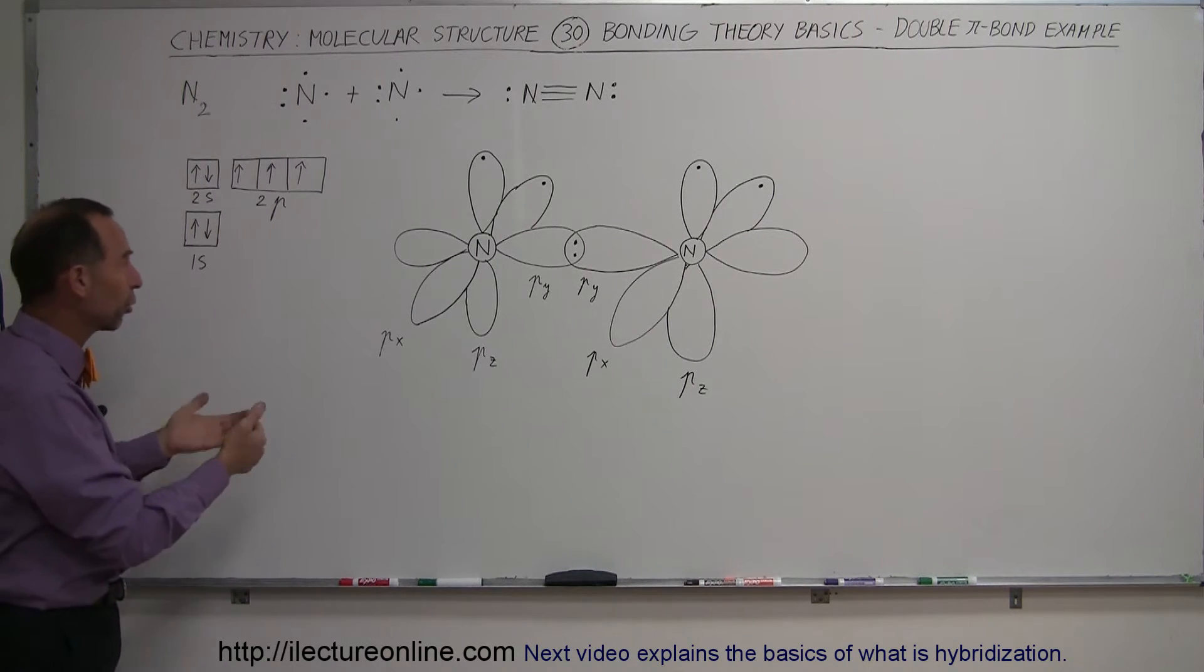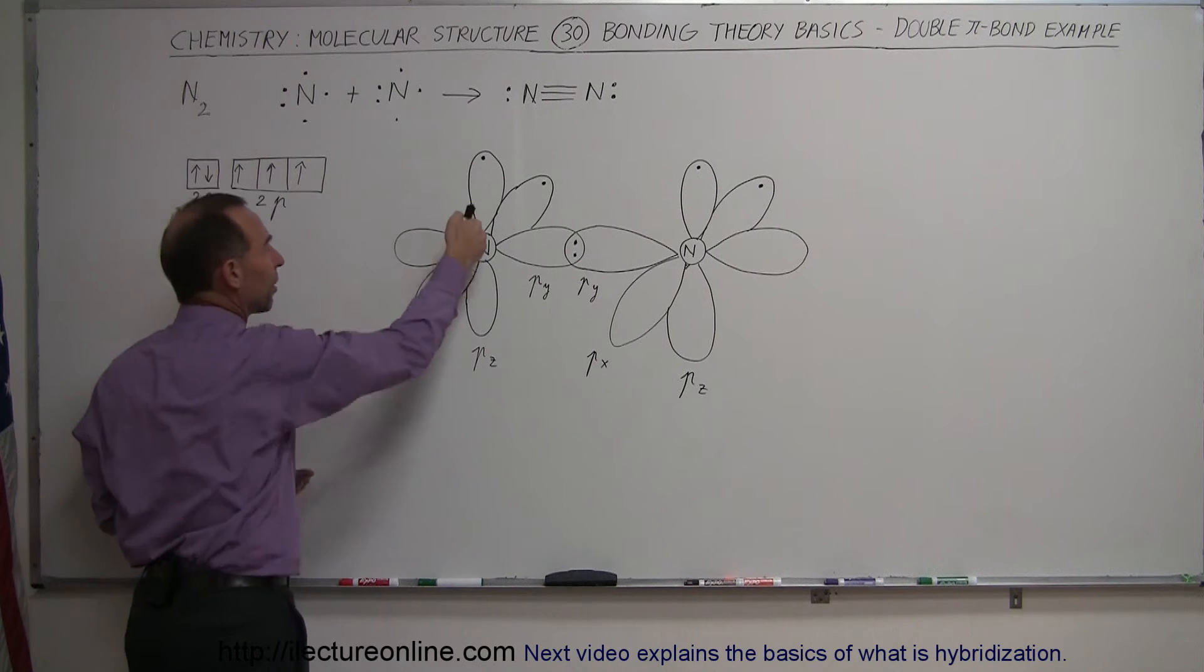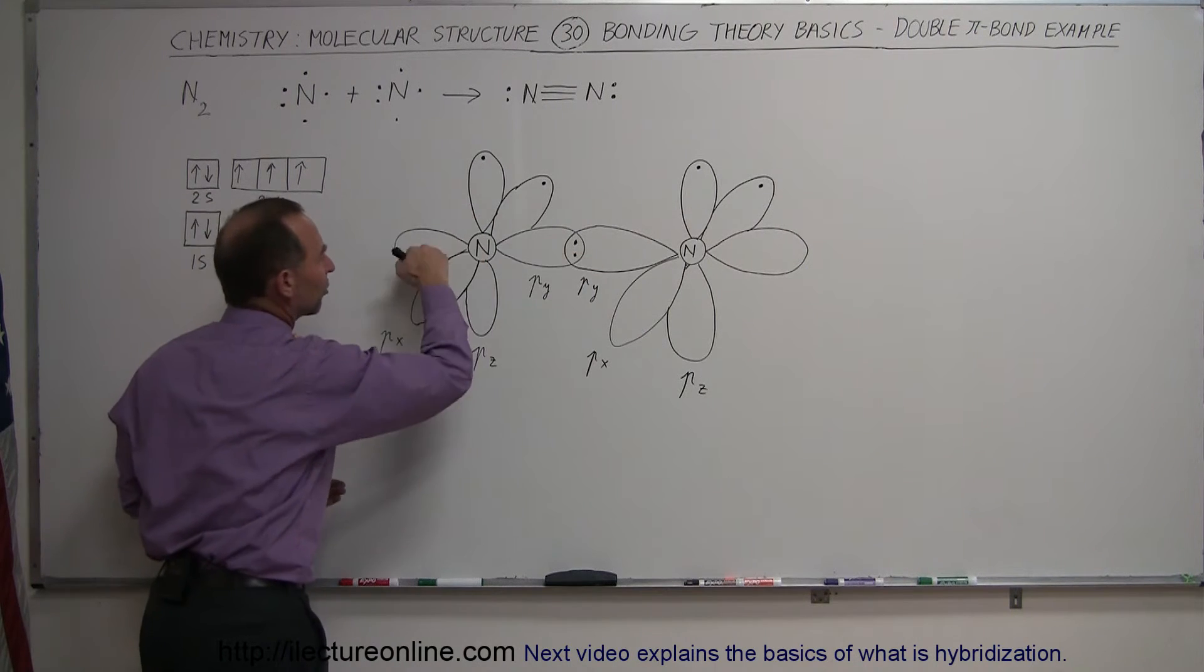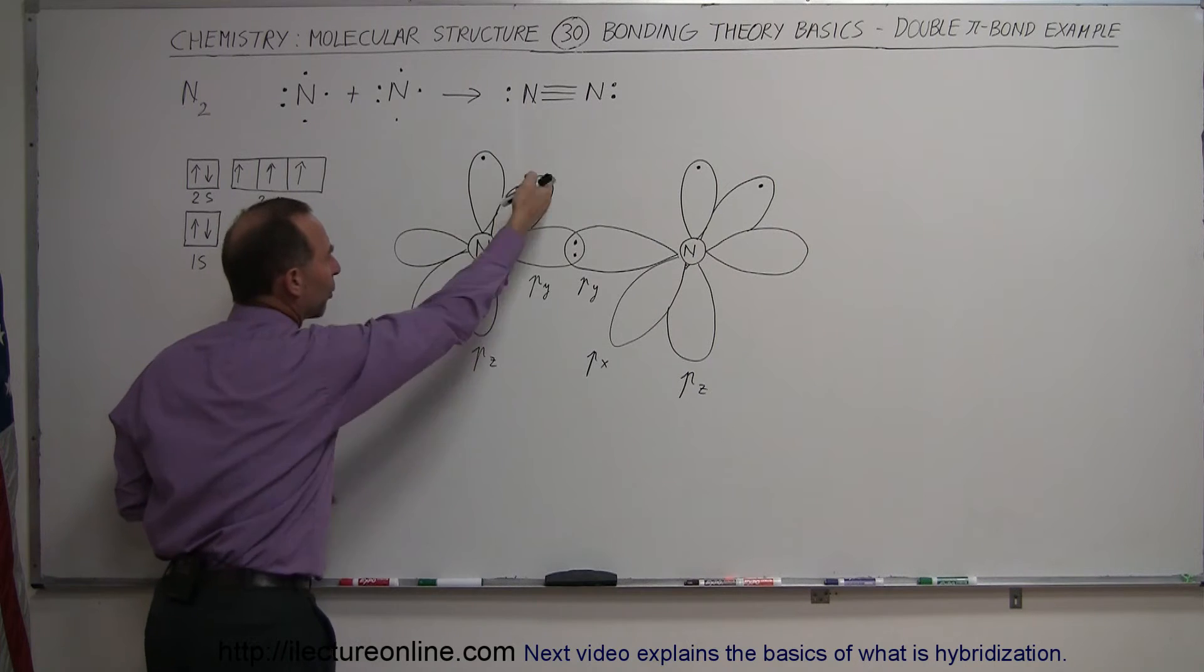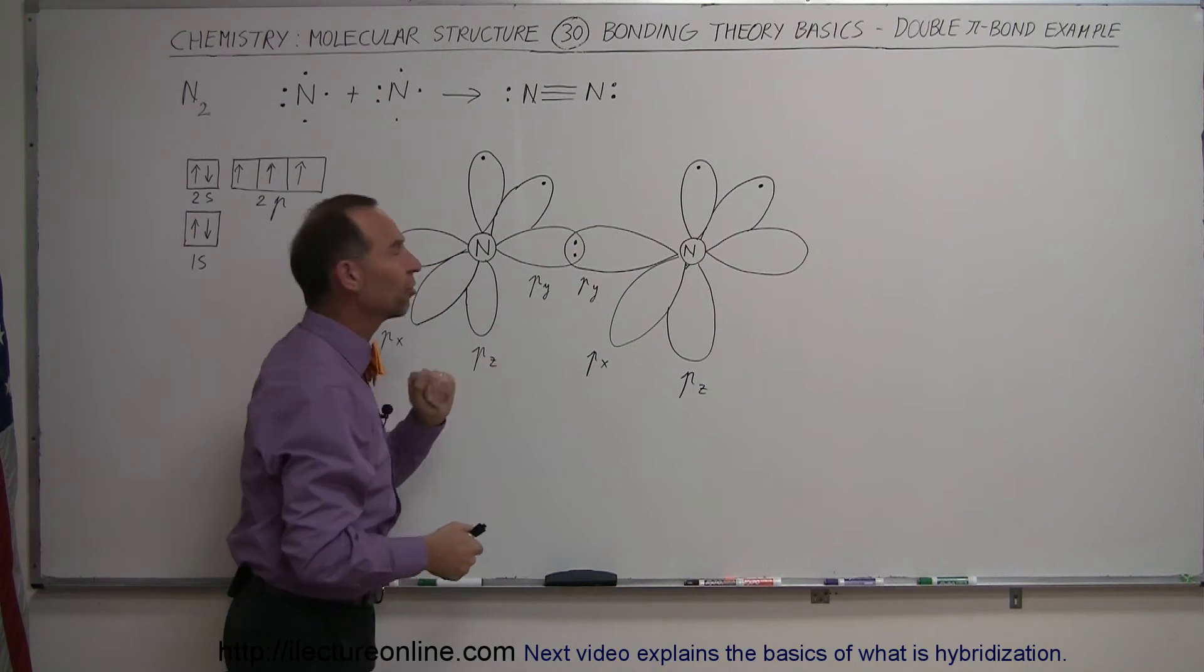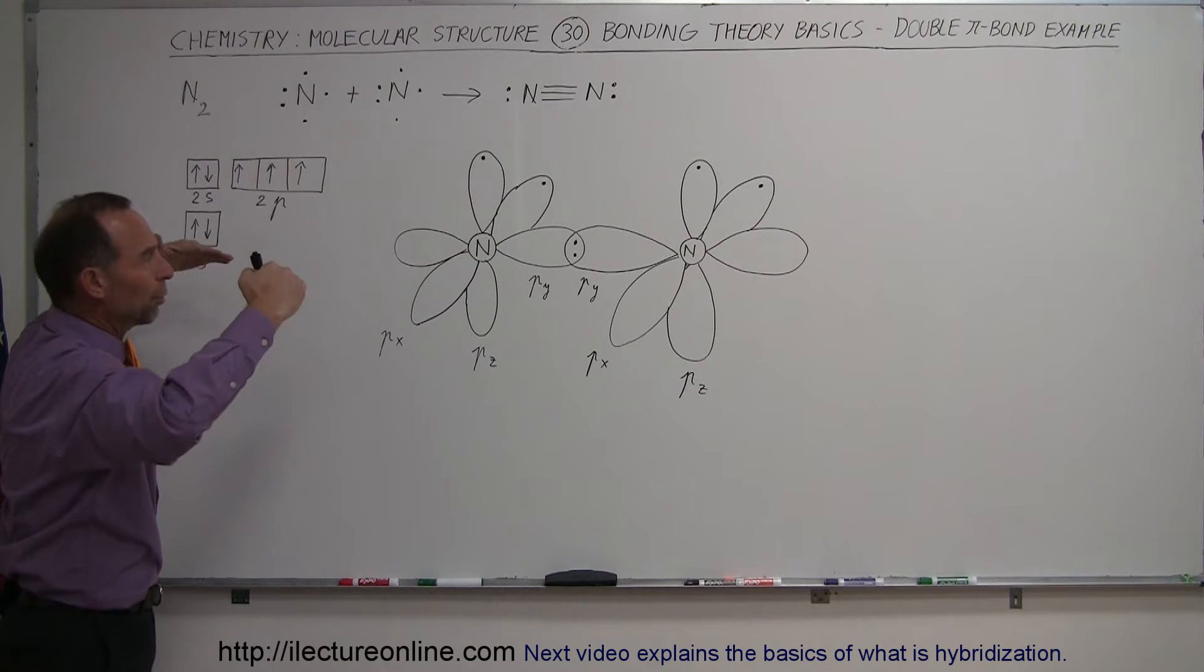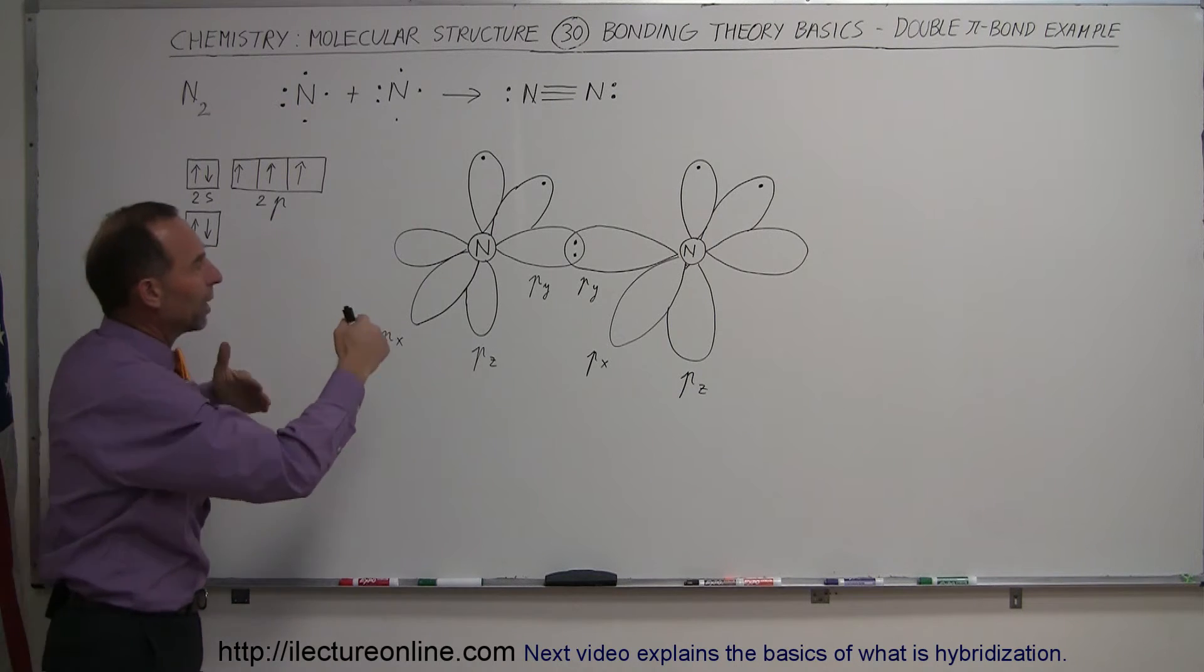Well, since nitrogen has three p orbitals, it has a p orbital in the z direction, a p orbital in the y direction, and a p orbital in and out of the board in the x direction. Here we have two nitrogen atoms like that, and the two p orbitals sticking towards each other in the y direction